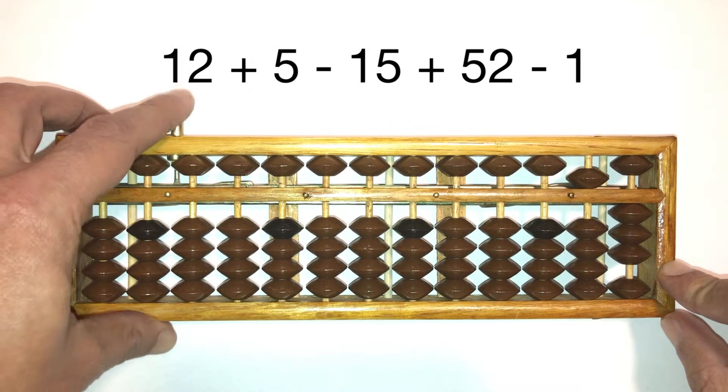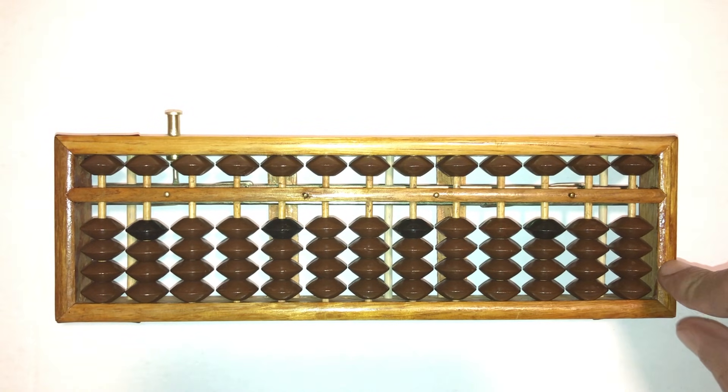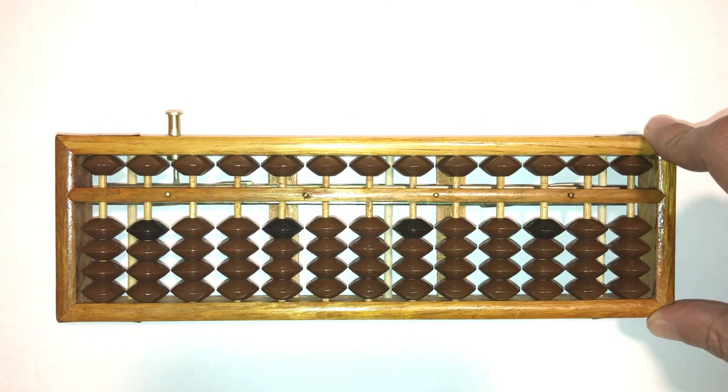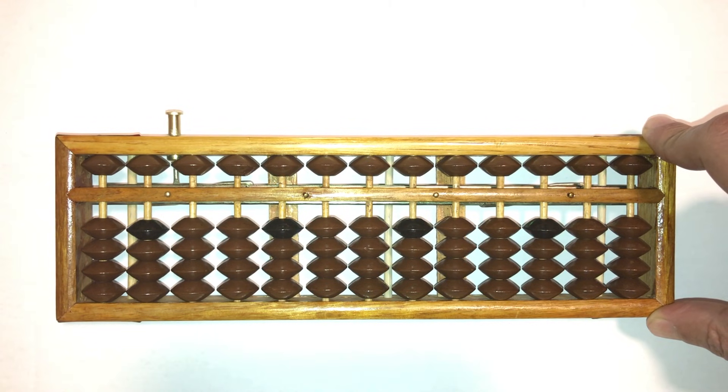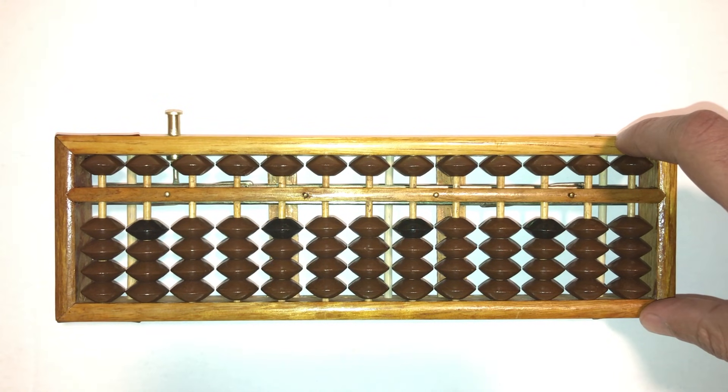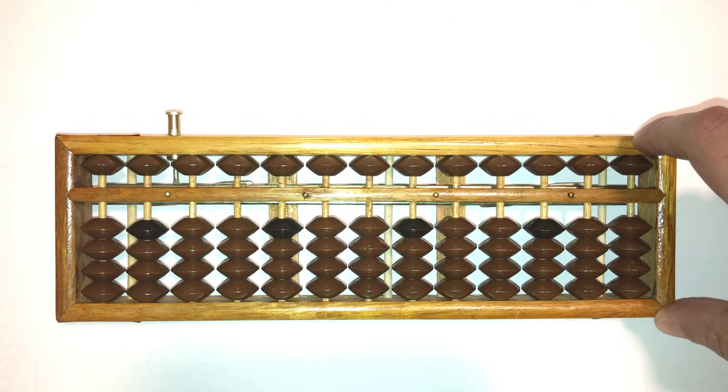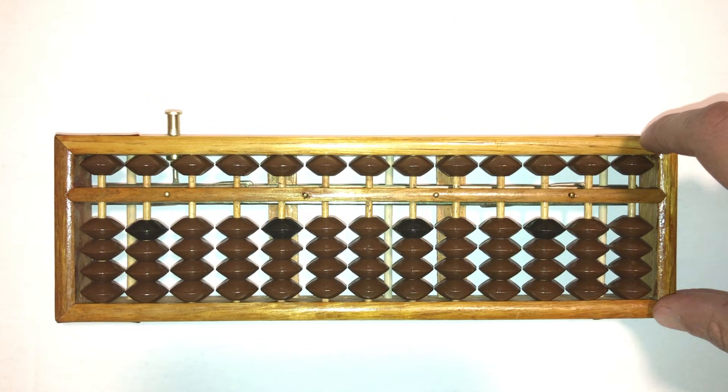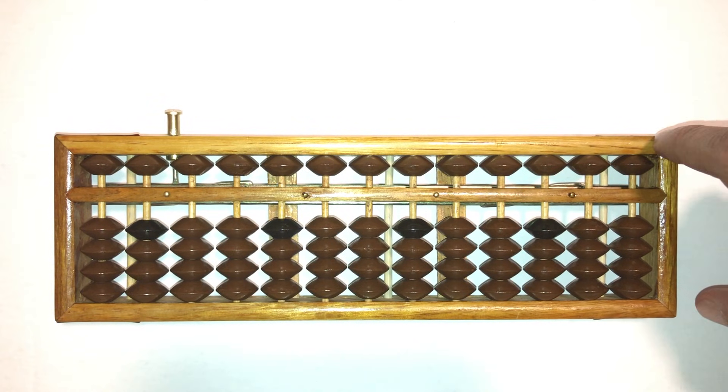Easy enough? Alright, so by now you've probably noticed that we haven't worked with numbers that contain 6, 7, 8, and 9. Now that's very astute of you if you've noticed that. But we'll be working with them in the next lesson. But please, before you move on to the next lesson, make sure you complete the practice worksheets in this lesson. Again, remember, there are no shortcuts. See you in the next lesson where we'll learn how to use both upper beads and lower beads together, and work with numbers that contain 6, 7, 8, and 9. Thanks again for watching.